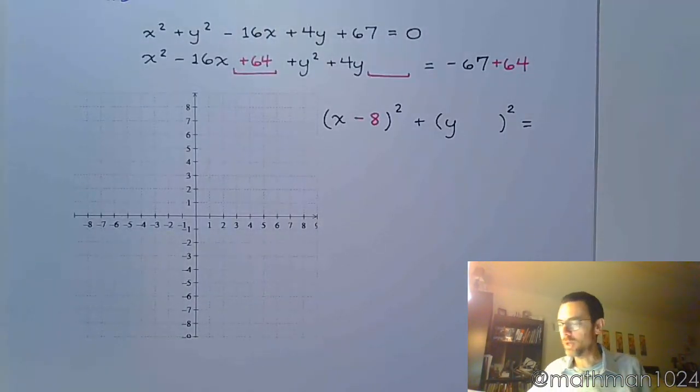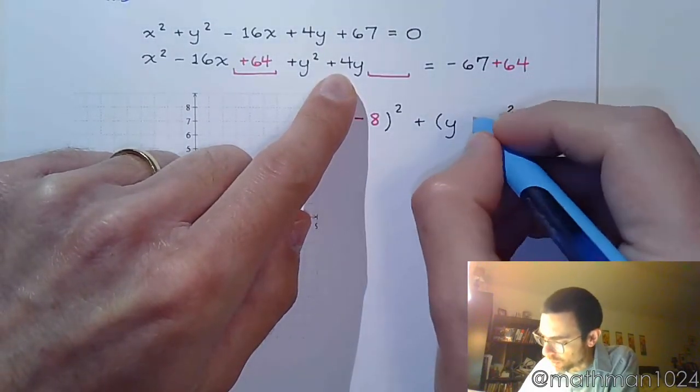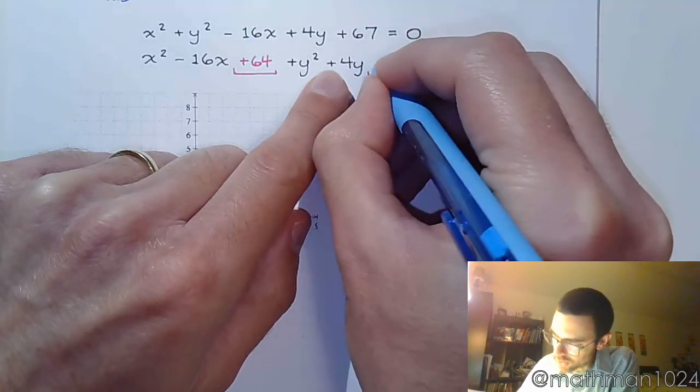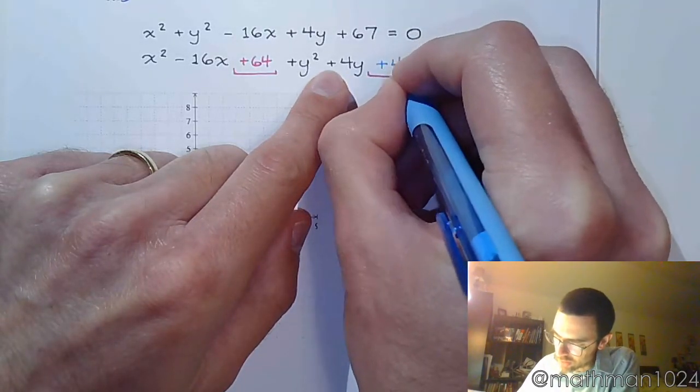And now we complete the square for the y. So half of 4 is 2, so plus 2. And 2 squared is 4, so that becomes plus 4.